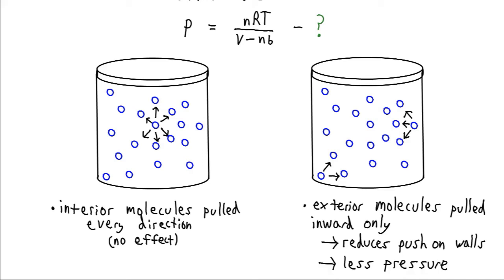We're going to split this into two cases. We're going to consider the interior molecules, kind of in the middle here, and then the molecules in the edge of the container. Now the interior molecules, they get pulled in every direction. If there's a molecule up and to the left, there's probably also a molecule down to the right. And those combined pullings in opposite directions cancel out. So there's not really any effect we have to consider on these interior molecules.